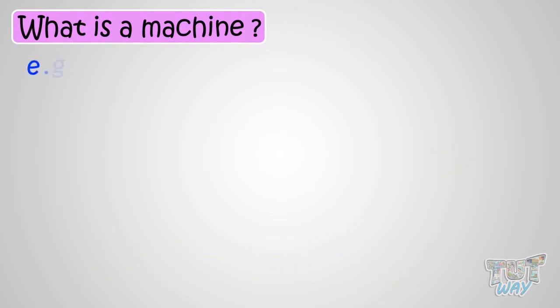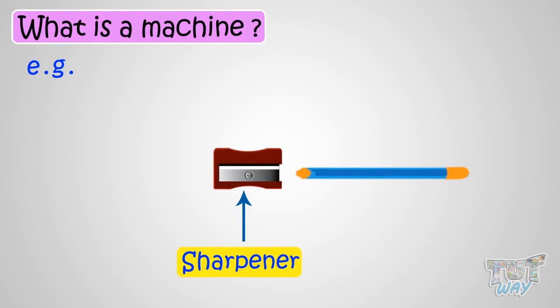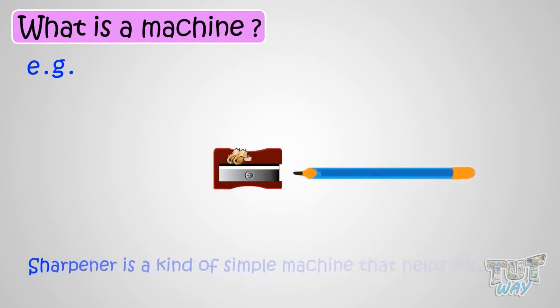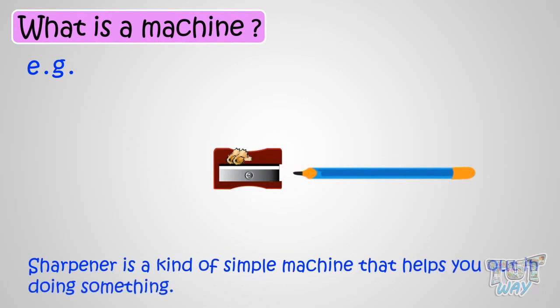For example, if your pencil is blunt and you want to sharpen it, you will use a simple structure, a sharpener. It will make it easy to sharpen it. So a sharpener is a kind of simple machine that helps you out in doing something.